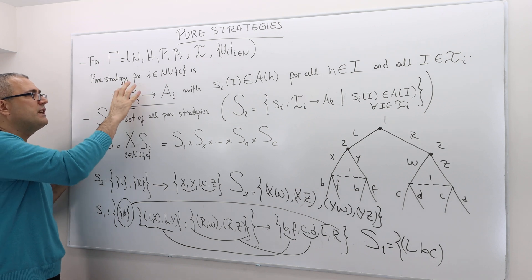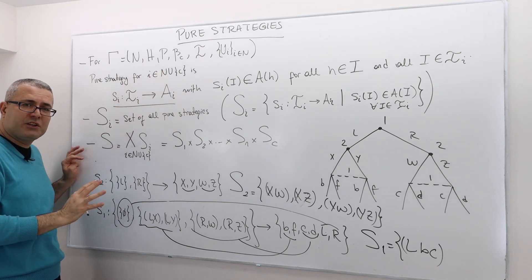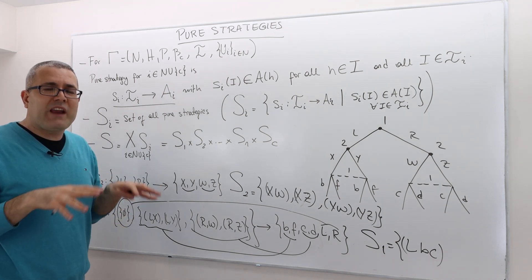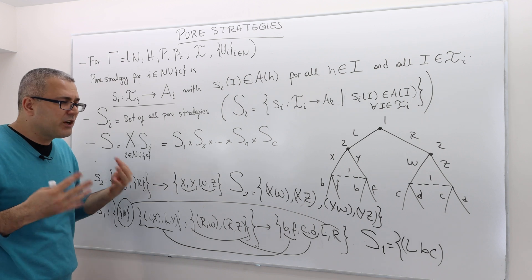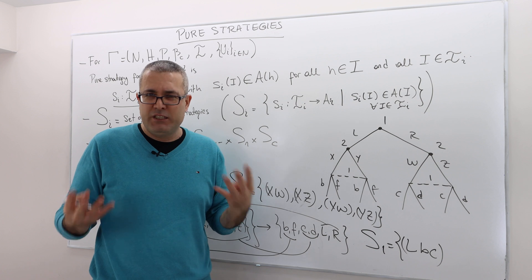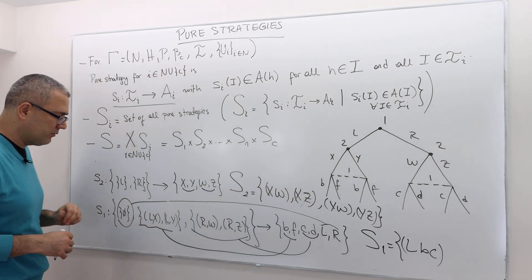So strategy maps each information partition to an available action. So, you know, once you program this like a computer program, trust me, it makes life easier, but when you verbally describe it, it makes no sense, I understand. But let's stick with the mathematical notation.